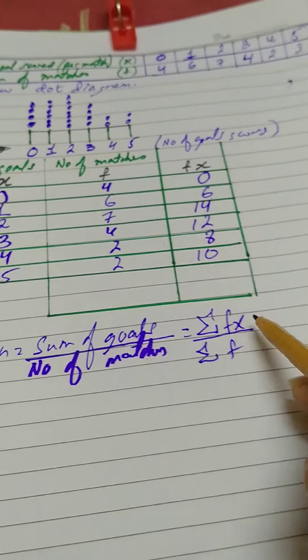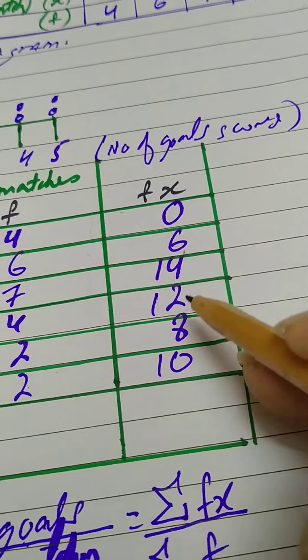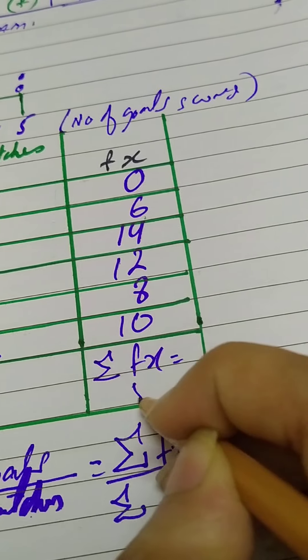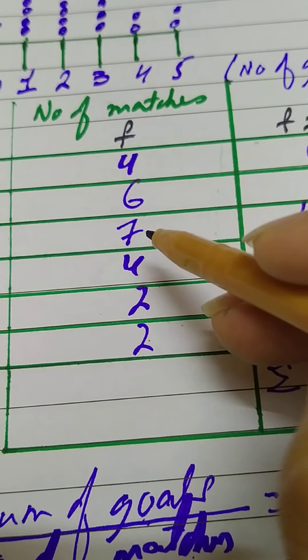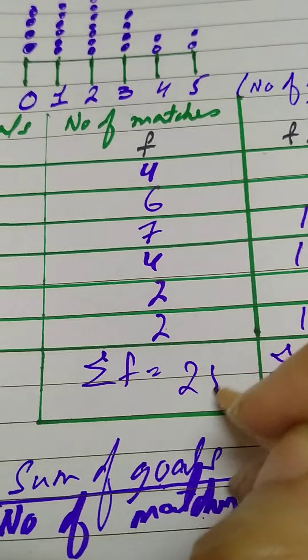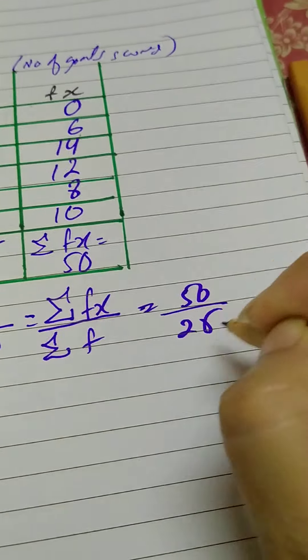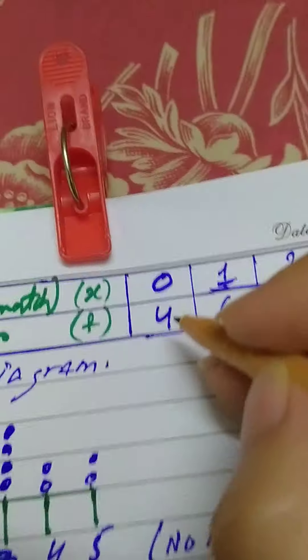When frequency table is given, use the symbolic formula sum of fx over sum of f. Adding all fx values: 0 + 6 + 14 + 12 + 8 + 10 = 50, so sum of fx is 50, meaning 50 total goals scored. Sum of f: 4 + 6 + 7 + 4 + 2 + 2 = 25 matches. Therefore mean = 50 divided by 25 = 2. The mean number of goals is 2.